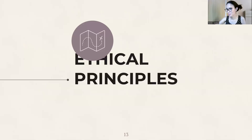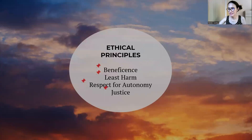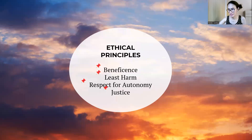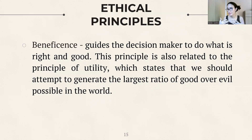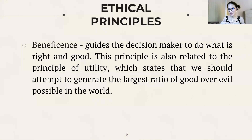Ethical principles include beneficence, least harm, respect for autonomy, and justice. First, beneficence guides the decision maker to do what is right and good. This principle is related to the principle of utility, which states that we should attempt to generate the largest ratio of good over evil possible in the world — it has some similarity to utilitarianism. It answers the question of what is right and good, and stipulates achieving the greatest amount of goodness for the majority.